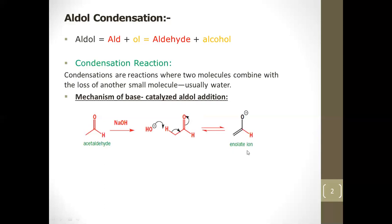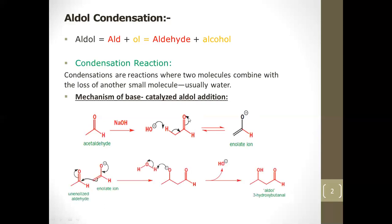When the alpha hydrogen is removed, you get an enolate. The electrons move over to oxygen to form a negative ion. 'Enolate' combines three parts: 'en' for alkene, 'ol' for alcohol, and 'ate' for the negative charge.